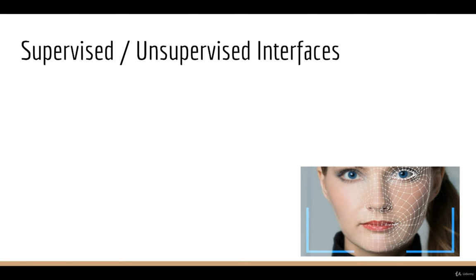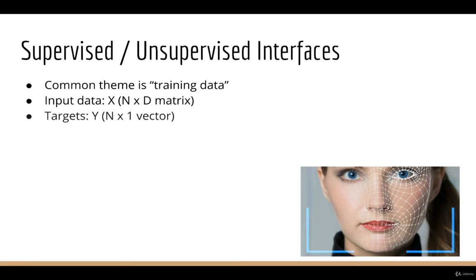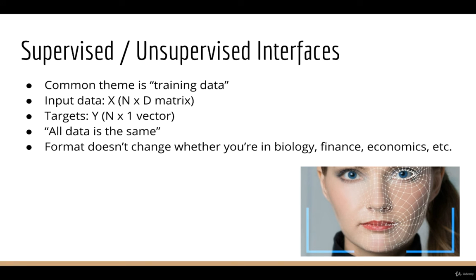The common theme with both of these is that the interface is training data. You take in some training data — either X and y or just X — and you call a fit function. In the case of supervised learning, you can then make predictions on future data. In both cases, X is just an N-by-D matrix of input data, and y is just an N-length vector of targets. This is why we say all data is the same — this generic format doesn't change whether you're doing biology, finance, economics, or any other subject. Data is just data, a table of numbers, and we can fit most algorithms in one neat library called scikit-learn.